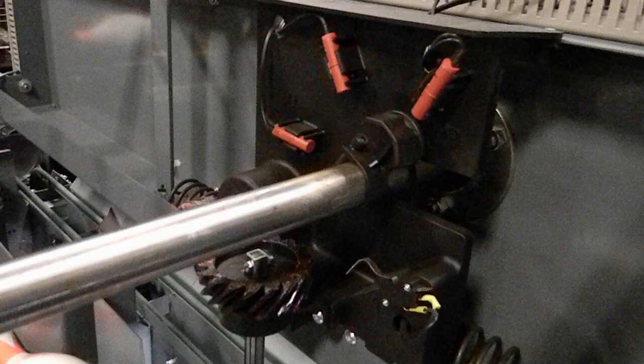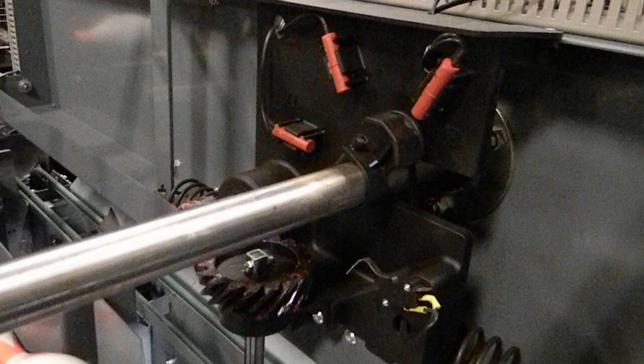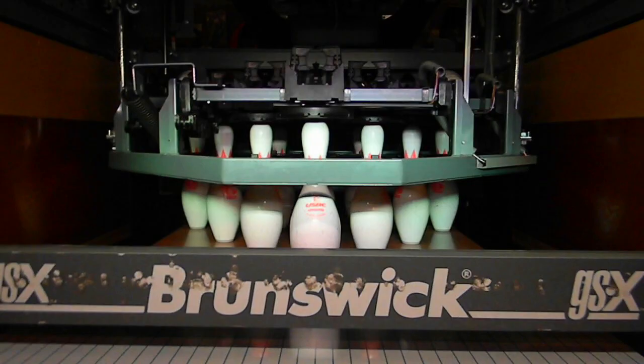At switch B the next-gen CPU will read the pin holder switches and determine if one or more pins are left standing. The CPU sends this pinfall information to the automatic score.